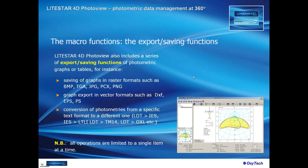Leicester 4D Photoview also includes a series of export and saving functions for photometric graphs and tables. For instance, saving of graphs in raster formats such as BMP, TGA, JPG, PCX, and PNG. Raster formats store all the different pixels characterizing the image. However, raster format is quite limited because it is not easy to modify characters or colors — it has to be done pixel by pixel — which is a long process when preparing paper catalogs.